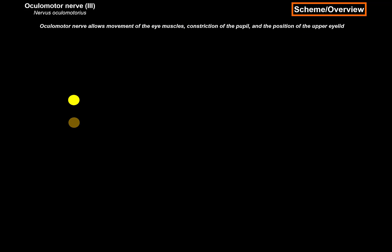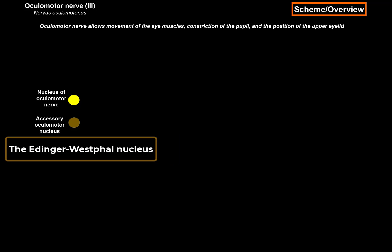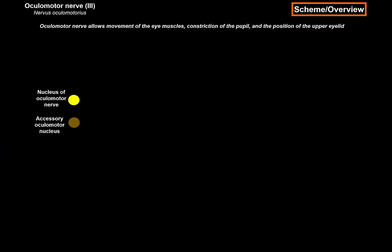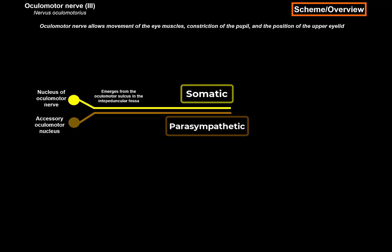There are two nuclei for the oculomotor nerve, both located in the midbrain at the level of the superior colliculi. Those are called the nucleus of the oculomotor nerve and the accessory oculomotor nerve nucleus, which is known as the Edinger-Westphal nucleus. Those two nuclei give off fibers that meet and run together as something called the oculomotor complex, which is a combination of somatic and parasympathetic neurons.